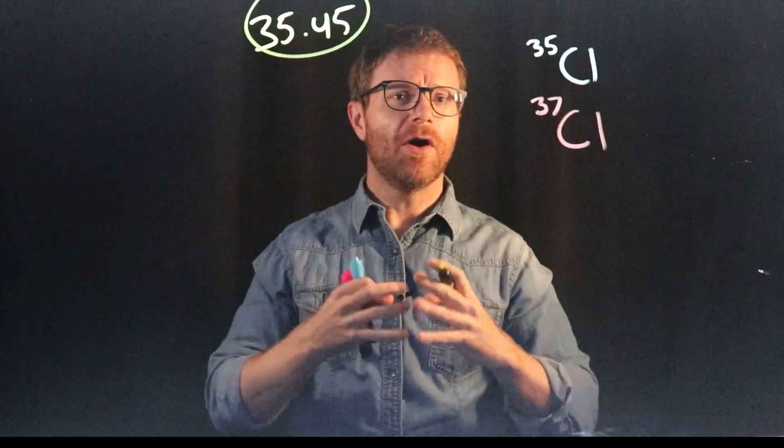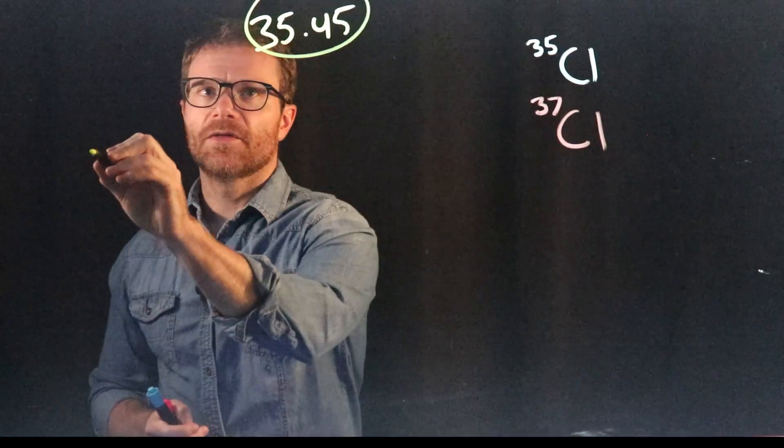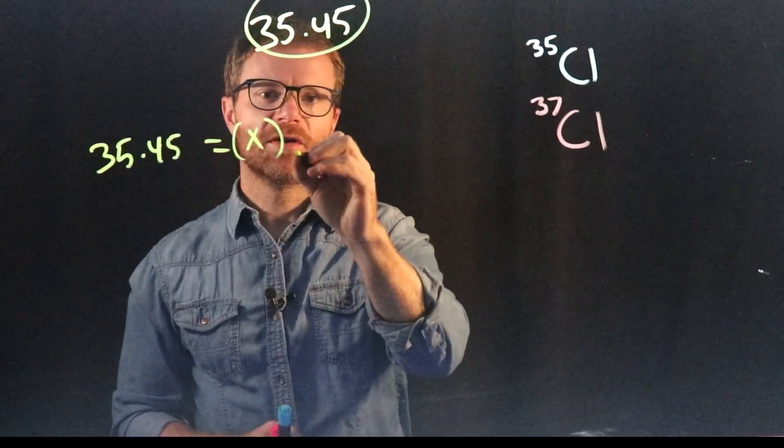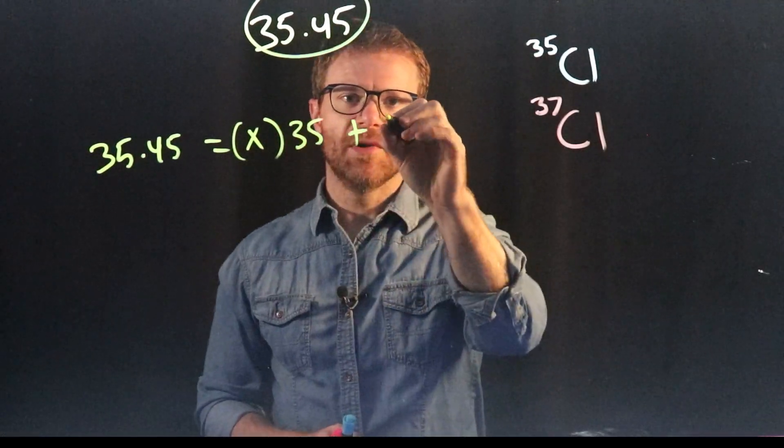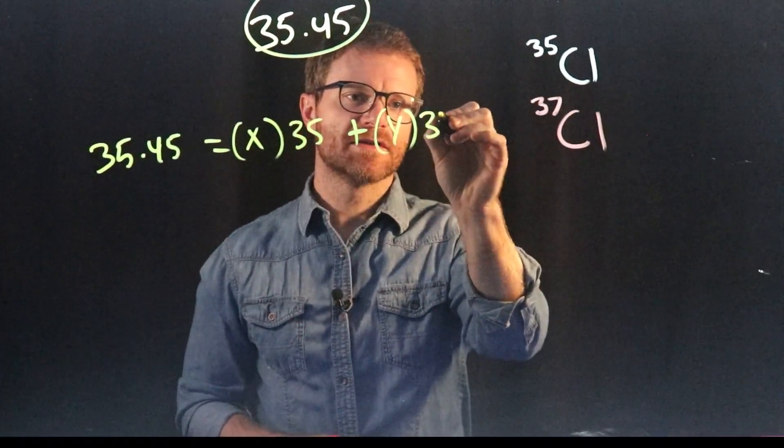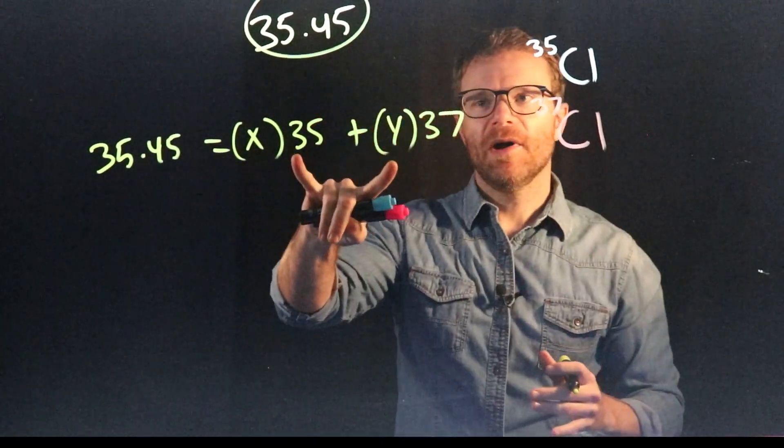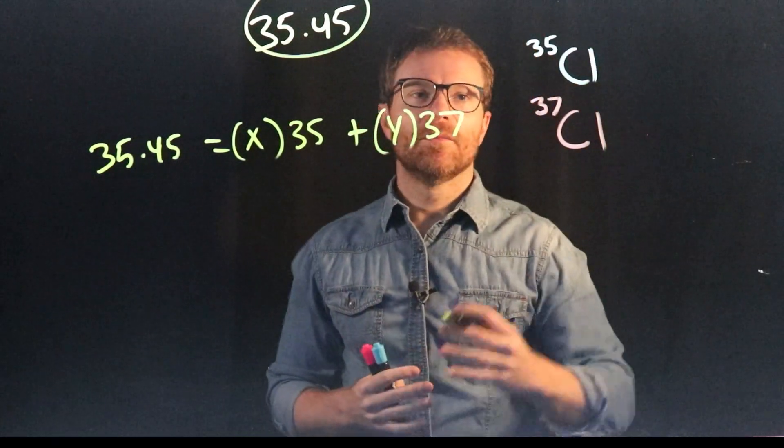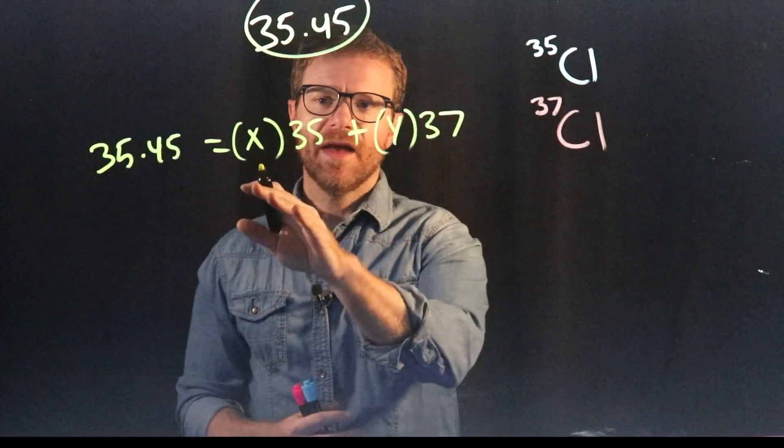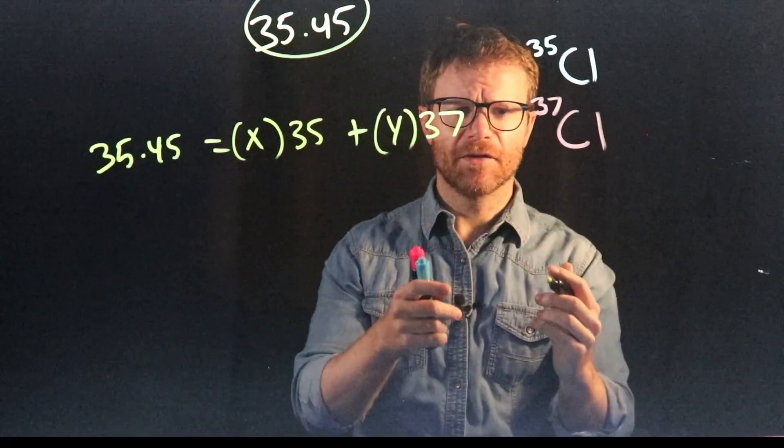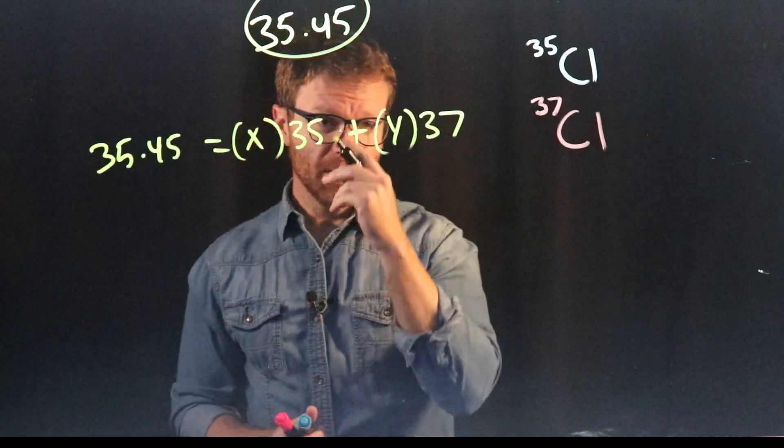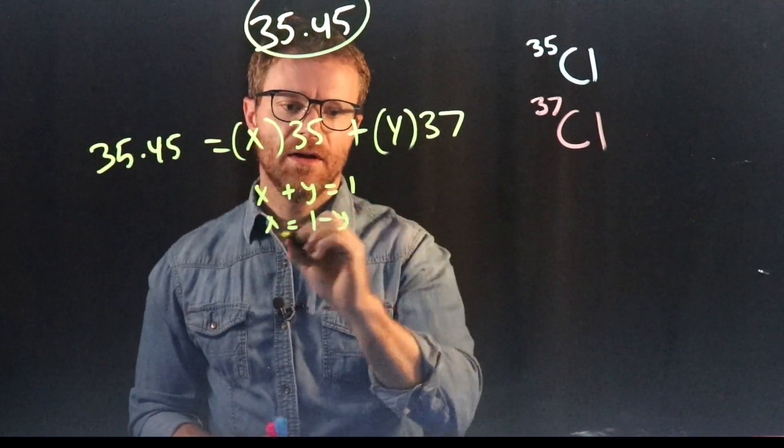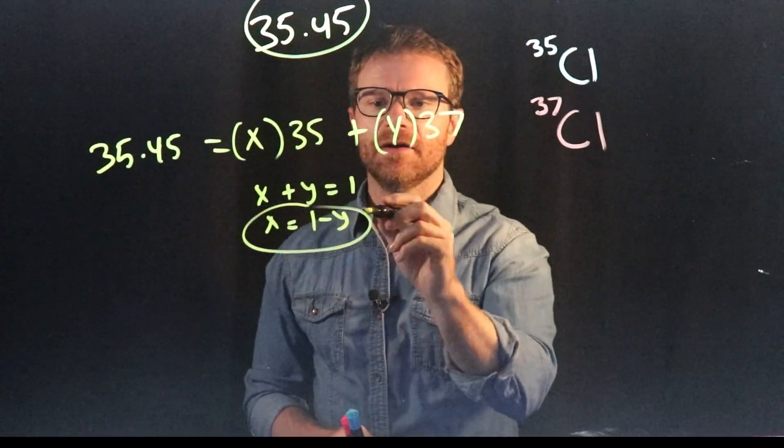So this is the prevalence of all of both these isotopes. So we know that 35.45 is the weighted average of however much chlorine 35 there is plus however much, we'll call that Y, chlorine 37 there is. Now once again, the thing we know about these two numbers, X and Y, is they have to add up to 100. If these are the only two isotopes of chlorine, then all the chlorine in the world must add up to 100%. So that means if we're doing that in decimal form, instead of 100, we're using the number 1. So X plus Y equals 1. And so if X plus Y is equal to 1, then we can just think of that as being X equals 1 minus Y. And we can plug this value in for X.